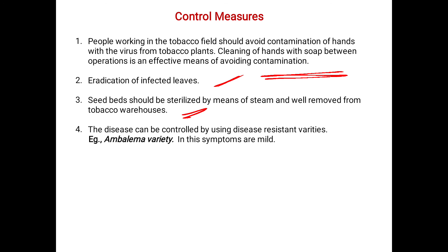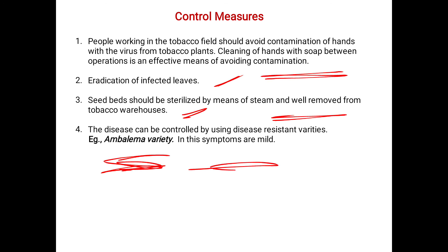The disease can also be controlled by using resistant varieties. The resistant variety is the emblema variety, where even if the plant is infected, it shows a minimized percentage of affected disease. This is due to the resistant gene manipulated into the plant, which provides resistance. Symptoms are mild in this variety because it carries a resistant gene against tobacco mosaic virus.